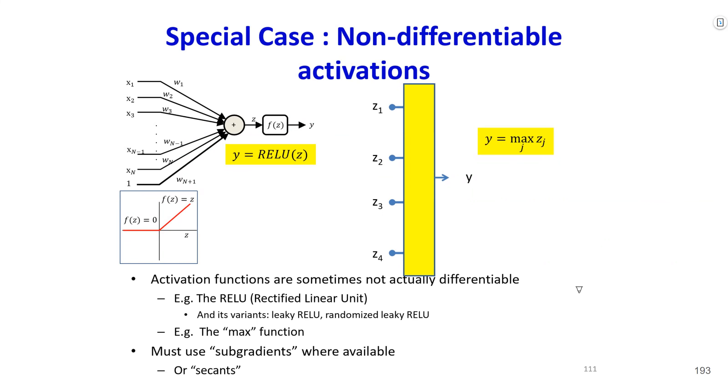And we saw some activation functions like ReLU and max functions. And you might be curious. Hey, you told me that we should use differentiable functions. We cannot use just any functions, but we can use only differentiable functions. However, ReLU and max, they are not differentiable. How can you use those functions for our neural network? So that is the topic of this slide. What should we do for non-differentiable activations?